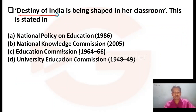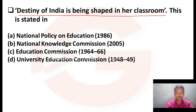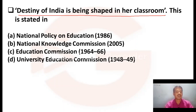"Destiny of India is being shaped in her classroom." This is stated in: Option A, National Policy on Education 1986. Option B, National Knowledge Commission 2005. Option C, Education Commission 2005. Option D, University Education Commission 1948-49.